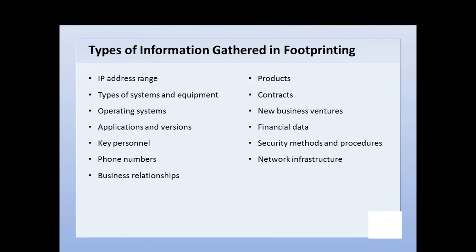We also look for what kind of operating systems they use, maybe even applications, database versions, and so forth. We're looking at key personnel — who is the security person, who is the IT person, who are the senior managers. We may be trying to get phone numbers so we can conduct social engineering attacks. We may also look at business relationships — the company's relationship with another company, a competitor, or relationships that businesspeople have with other business personnel.